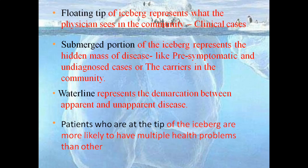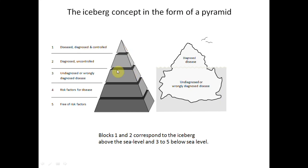Patients at the tip of the iceberg are more likely to have severe health problems. As cases approach the tip, severity and morbidity increase. Going down, patients become more healthy. Breaking down the iceberg: the very tip represents disease diagnosed and controlled; at the water level are those diagnosed but uncontrolled; below the waterline are undiagnosed or wrongly diagnosed, those with risk factors, and those free of risk factors at the bottom.